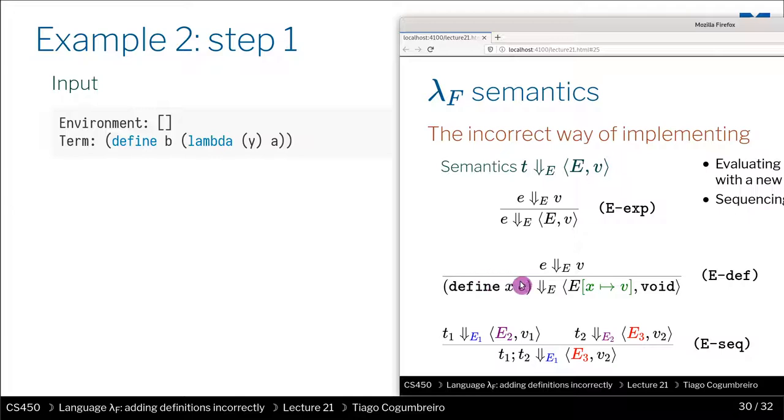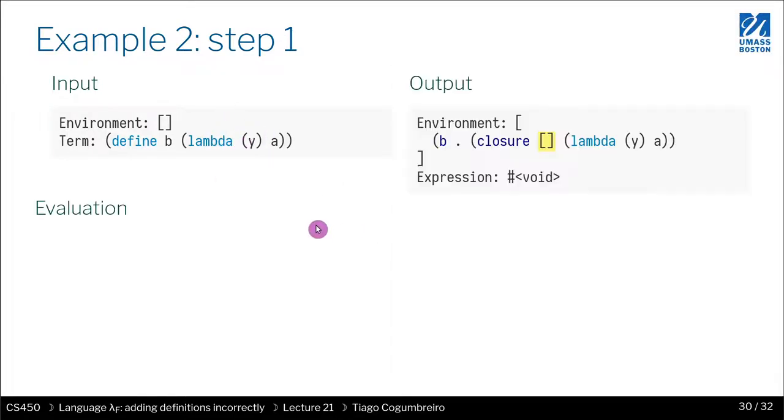So in this case, the empty environment. So the result of V is going to be a closure with the empty environment. What is the whole expression returning? It's going to return void. And what is the environment being returned? It's an environment that now assigns B to this lambda or the closure that resulted from evaluating this lambda. So that's exactly what we have. We have B on the left now in the environment and we have the closure that captured the empty environment.